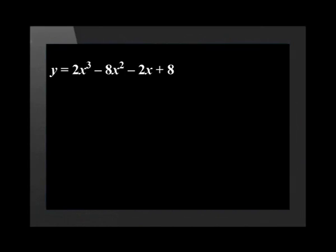The function is y equals 2x cubed minus 8x squared minus 2x plus 8. The first derivative is f dash of x equals 6x squared minus 16x minus 2.